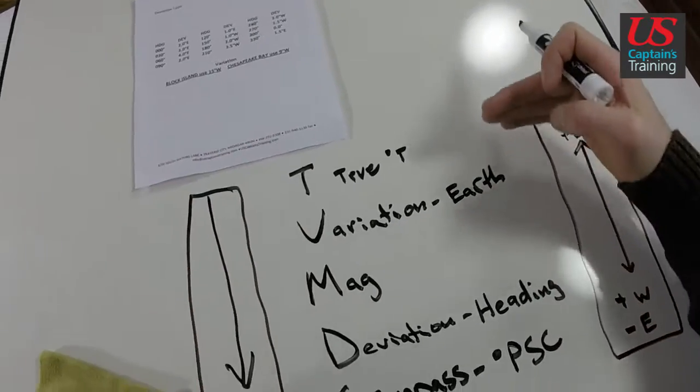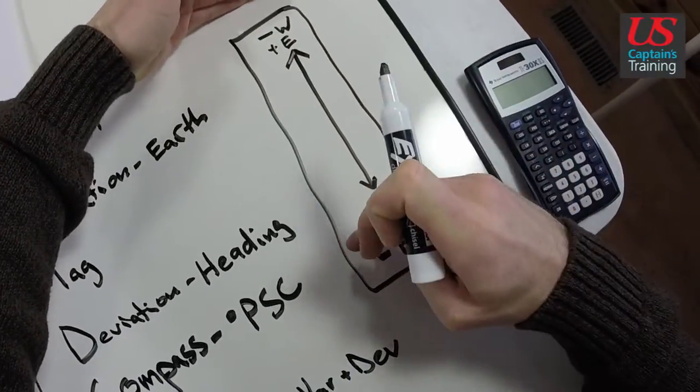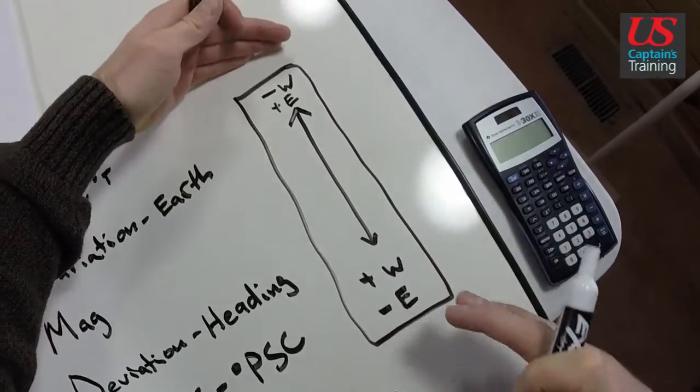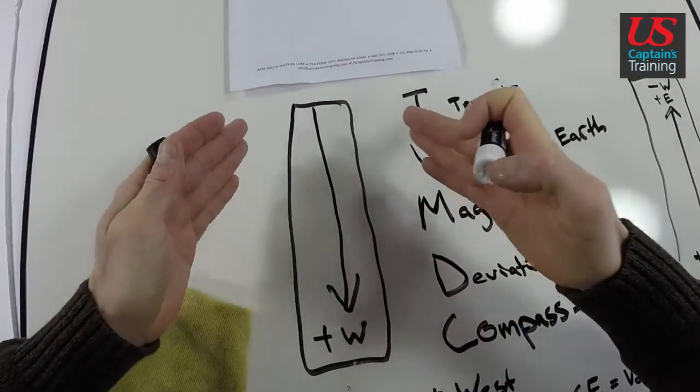So, it's a two-way street here. And this is the basic rule. You're going from true to compass, add west, subtract east. You're going from compass to true, add east, subtract west.